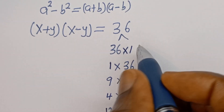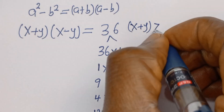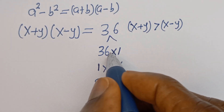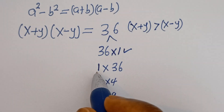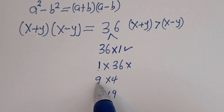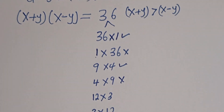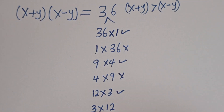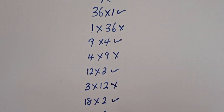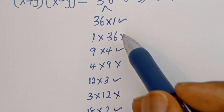But here we have x plus y is greater than x minus y. So here 36 is greater than 1, and 1 is less than 36. Then 9 is greater than 4, and 4 is less than 9. 12 is greater than 3, and 3 is less than 12. And 18 is greater than 2, and 2 is less than 18. So therefore we have 4 cases to consider.